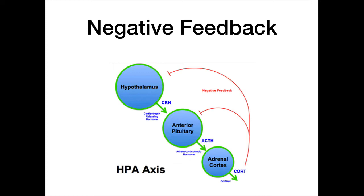Down-regulation happens at the level of the hypothalamus, the anterior pituitary, and also the hippocampus. A lot of the dysfunctions caused by high-intensity or chronic stress are related to disruption of this negative feedback mechanism, which can ultimately lead to prolonged HPA axis activation. If the feedback system is disrupted, cortisol keeps being produced unchecked — that's the potential problem. Or if it gets over-suppressed, cortisol production could drop off entirely.